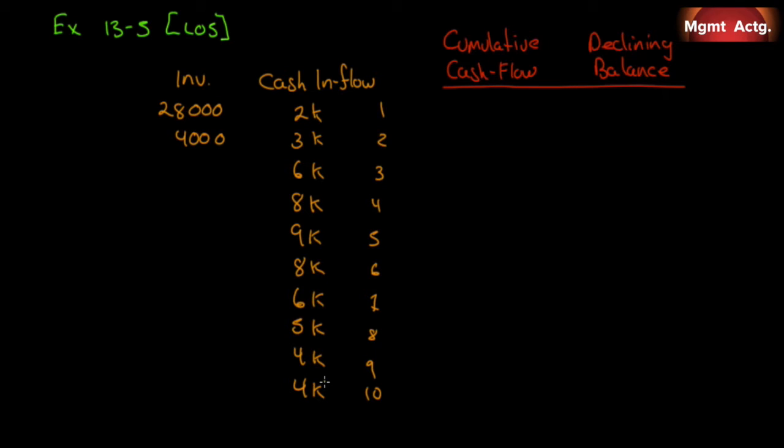We can do it in two ways: cumulative cash flow or declining balance. If we go cumulative cash flow, we're looking to get $32,000 back. With declining, we're looking to get to zero. So let us begin. In the first year we have $2,000, which brings us down to $26,000.